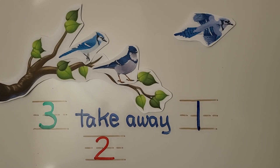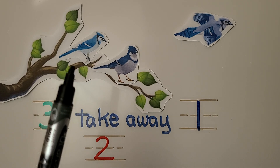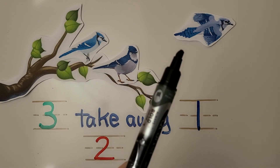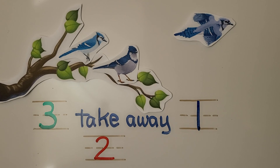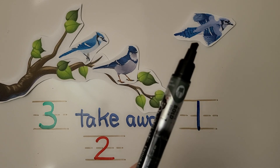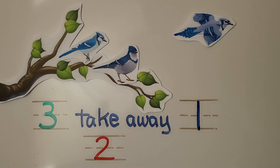Here we have some birds. Let's count them. I see one, two, three birds in this picture. There are three birds in all. The number in all is how many are in the picture. One flies away. The bird that's flying away is leaving. So how many birds are left in the tree? We take away the number that is leaving from the number in all.